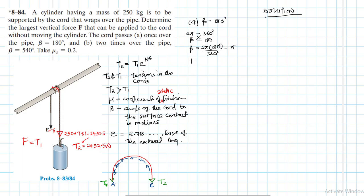We found what beta is. T2 we already found is 2452.5 newtons. Our T1 is equal to F, and our mu equals 0.2, which is the coefficient of static friction. So plugging them into this equation, T2 equals T1 e to the power mu times beta. Therefore we'll have 2452.5 equals T1 times e to the power 0.2 times pi.